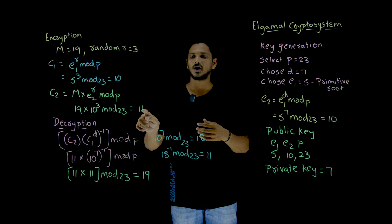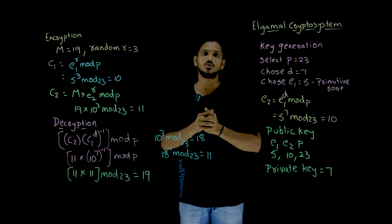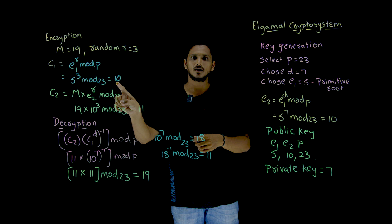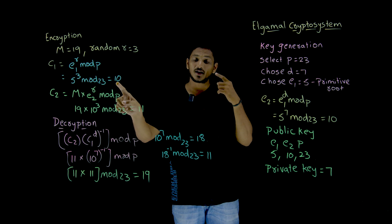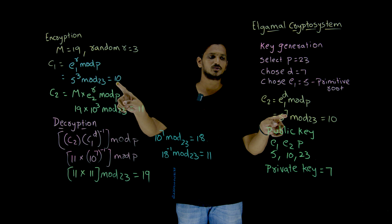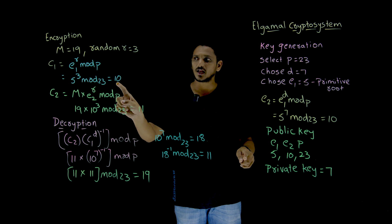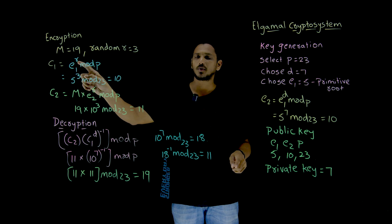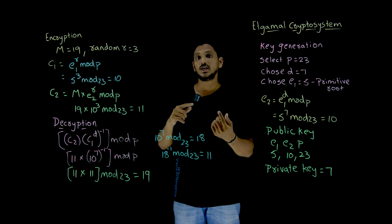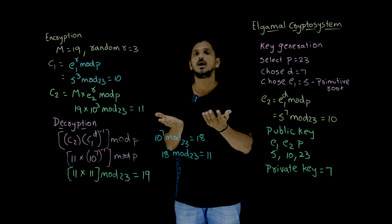Receiver is going to use this 10 and 11 value and he is going to do the decryption. So the receiver got 10. And the receiver already had the D value because it is a private key. D value 7. 7 is a private key. Inside this 10, we are having R value, E1 power R.